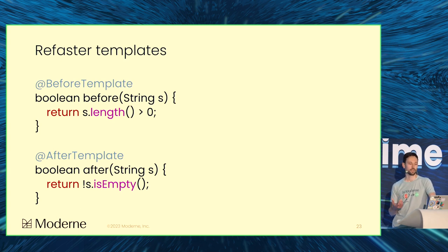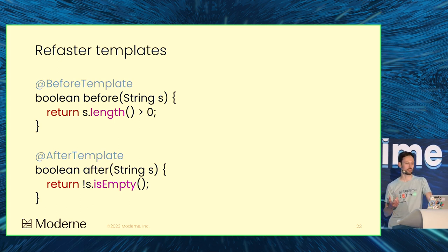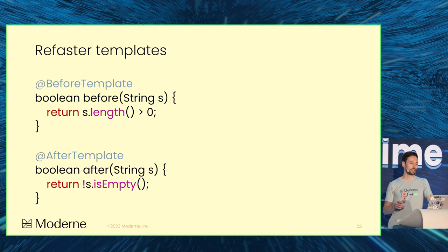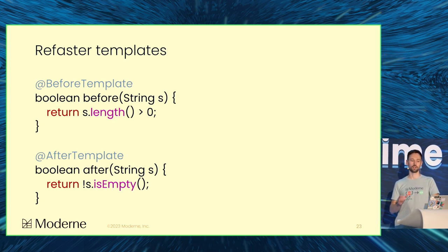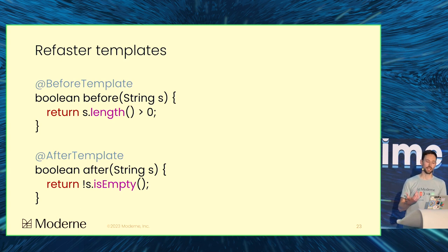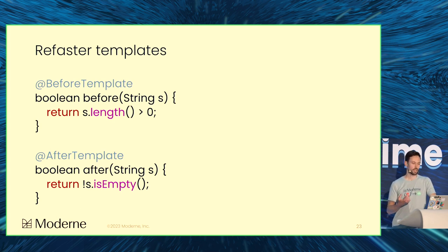I want to call out the Refaster templates specifically, as they will make recipe development a whole lot easier. You define a before template of the pattern you want to replace as an annotated method taking in an argument, and then an after template with the code pattern you want to see instead. These patterns are then matched throughout your codebase and replaced with ease. We like this approach so much that we're going to use exactly these annotations — which also allows us to leverage the work of others, such as Picnic, who have defined and open sourced their Refaster templates. Our users then get the benefit of applying Refaster recipes at scale without the Google Java format enforced by Error Prone. And if you need more than Error Prone can support, you can gradually switch to OpenRewrite recipes.